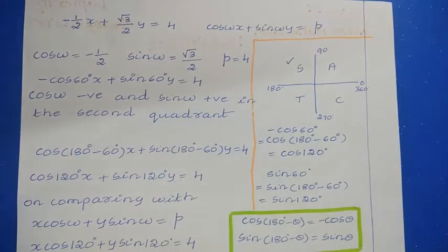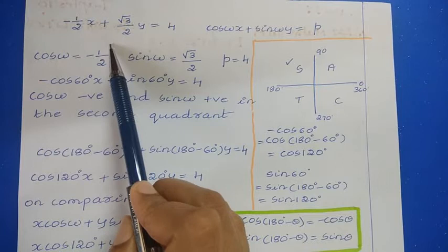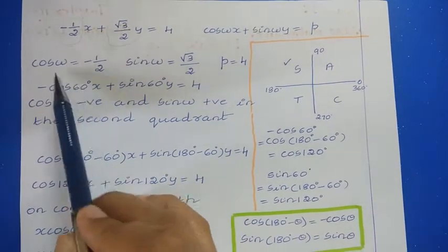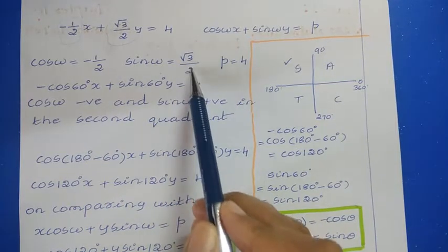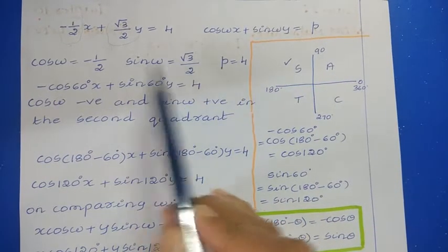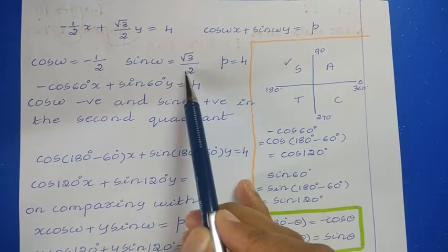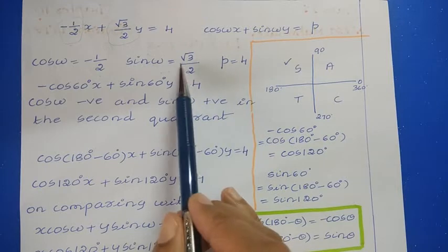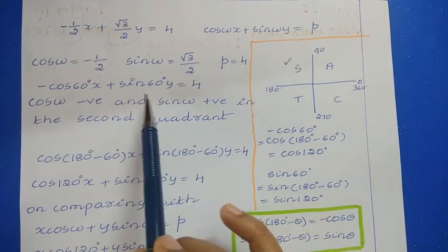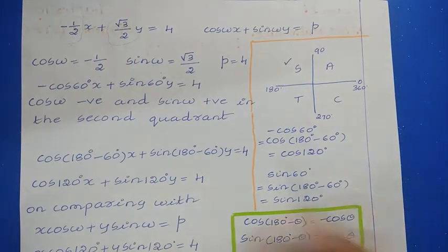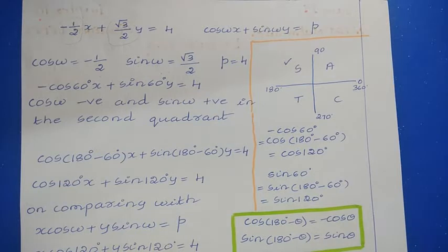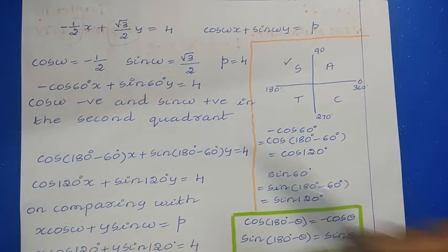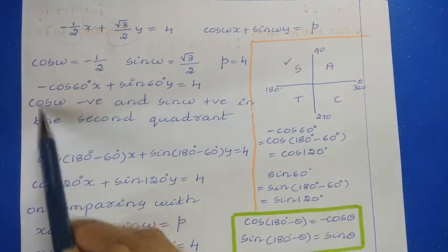Next we find ω. Comparing with the normal form, cos ω equals minus one-half and sin ω equals square root of 3 divided by 2. We need an angle where cos ω is minus half and sin ω is root 3 over 2. We know cos 60° equals half and sin 60° equals root 3 over 2, but we cannot use 60° directly because here we have minus half. So we must apply the quadrant rule to find the correct angle.